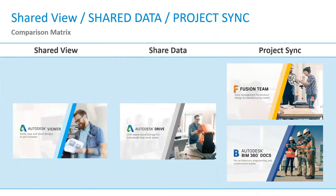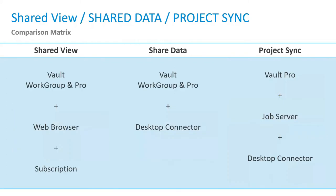There are three different collaboration applications: Shared View uses Autodesk Viewer, Shared Data uses Autodesk Drive, and Project Sync uses Fusion Team and BIM 360 Docs. For Shared Views, you need Vault Workgroup or Vault Pro with a web browser. For Shared Data, you need Vault Workgroup or Pro plus the Desktop Connector, a free download from Autodesk. For Project Sync, you need Vault Pro, a Job Server, and the Desktop Connector.